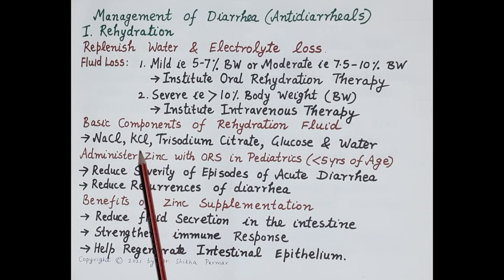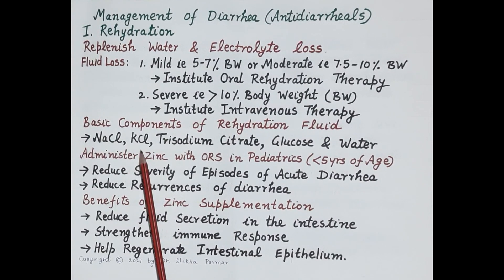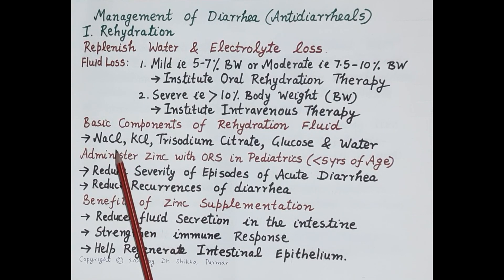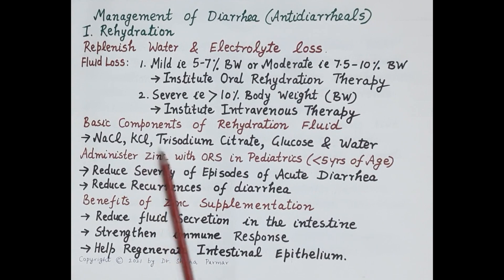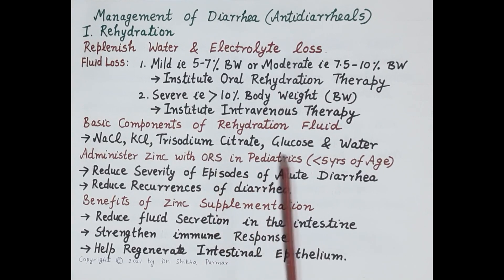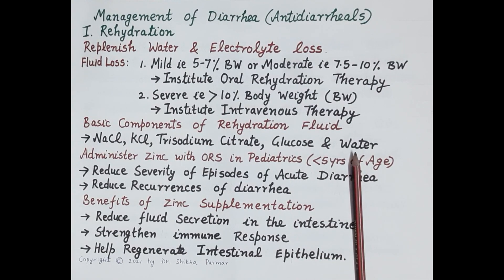The basic components of rehydration fluid include: sodium chloride, added to ORS to cover substantial loss of sodium in diarrheal stools; potassium chloride, to make up the loss of potassium in watery stools; trisodium citrate, which corrects metabolic acidosis; and glucose, which facilitates absorption of sodium in the ileum. Water is also essential.